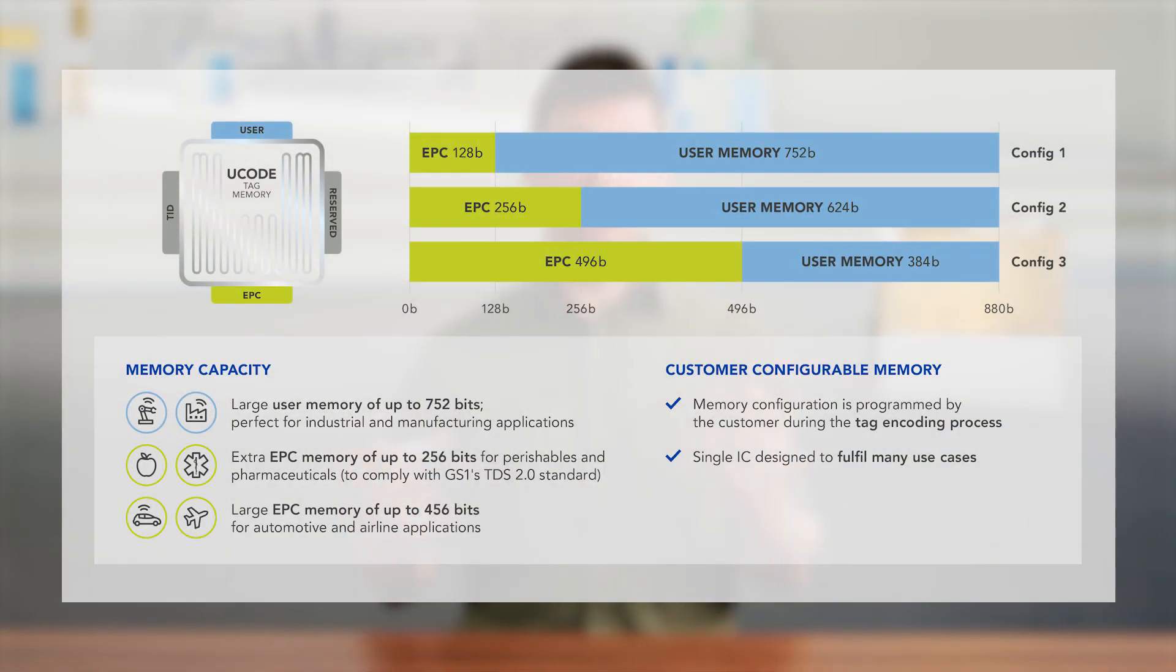While a small EPC and large user memory configuration would work well for industrial applications, a large EPC and smaller user memory configuration would be a great fit for automotive manufacturing and other industries using large coding structures. These configurations can be selected during the standard tag encoding process.